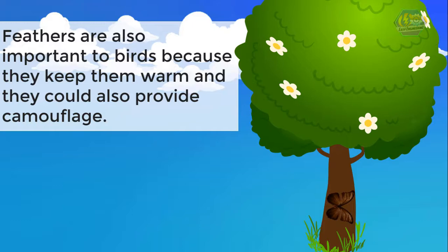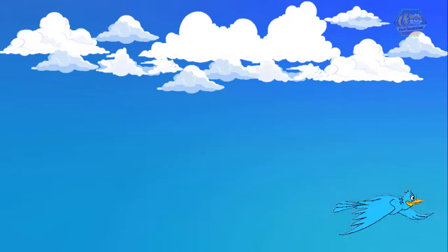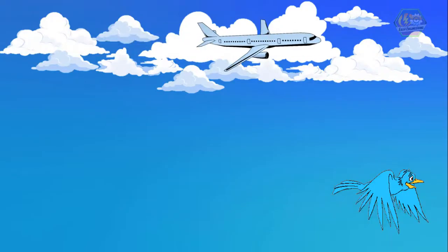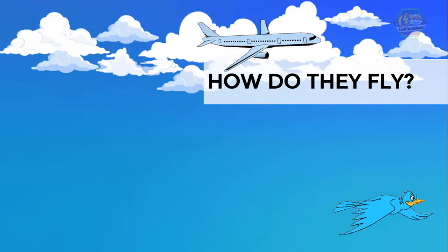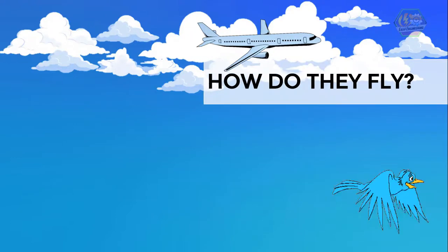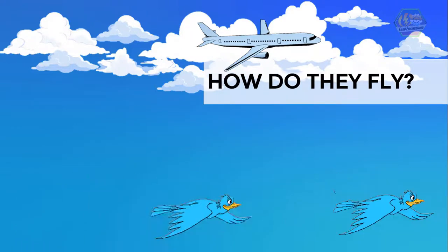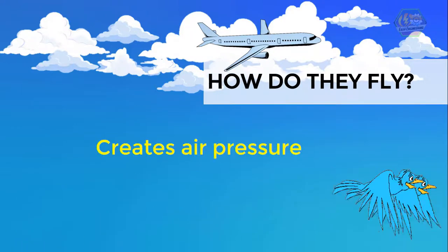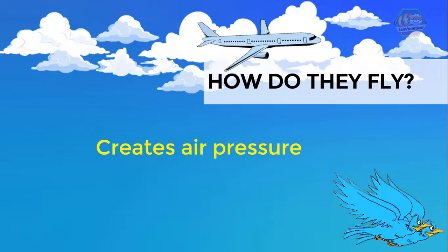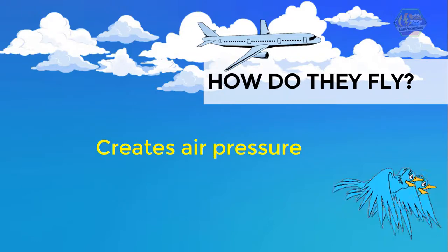Keep in mind that camouflage is a way for animals to blend in with their surroundings, which means they become hidden from predators. Humans can now fly thanks to machines, but what about birds — how do they fly?